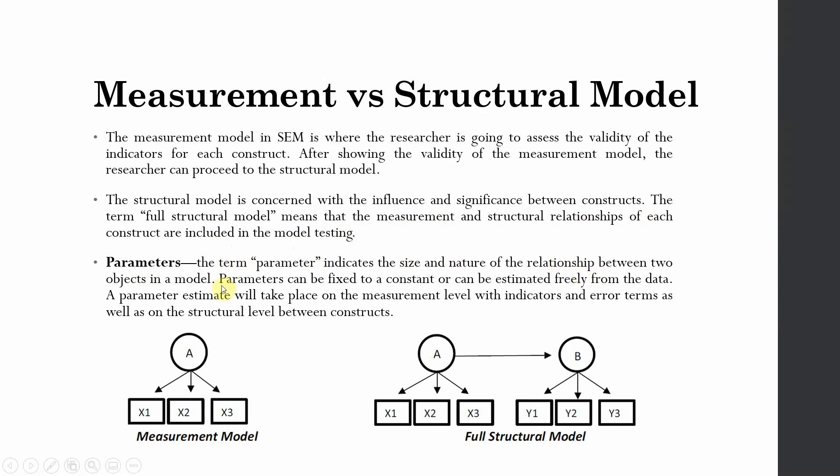Here you will have parameter estimates. They can be fixed to a constant or they can be estimated freely in the data. When estimating our measurement model, the parameter for one of the indicators is fixed while others are estimated freely.